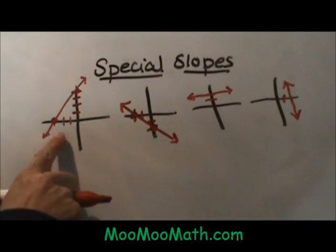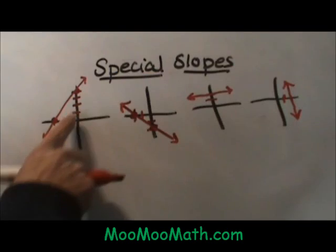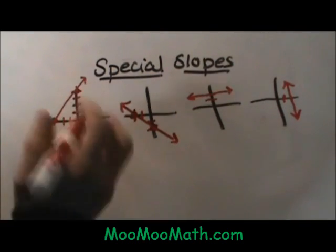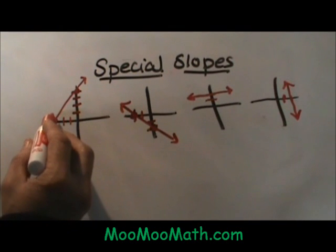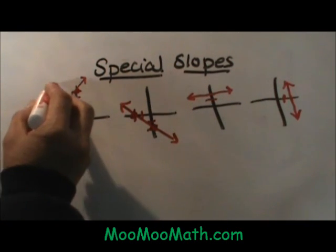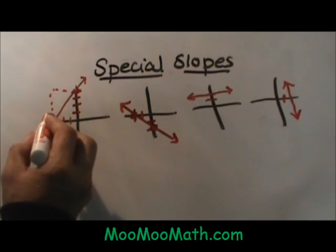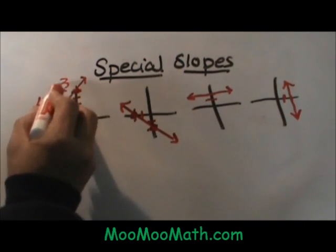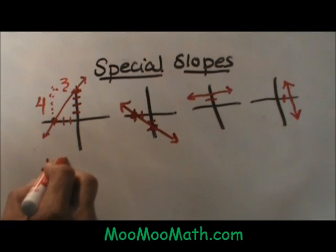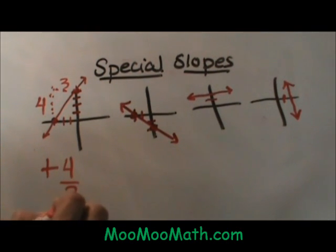This first one, this line, has a slope that is going up from left to right, so it is a positive slope. Remember we always count our slope as rise over run. In this problem we are going to rise 4 units and we are going to run 3 units, so our slope is positive 4 thirds.